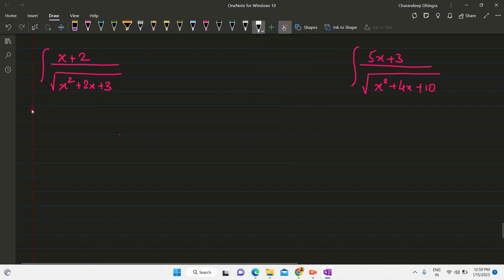the standard method is that you write x plus 2, that is the linear equation is equal to A into derivative of the quadratic, which is in this case x squared plus 2x plus 3 plus B.